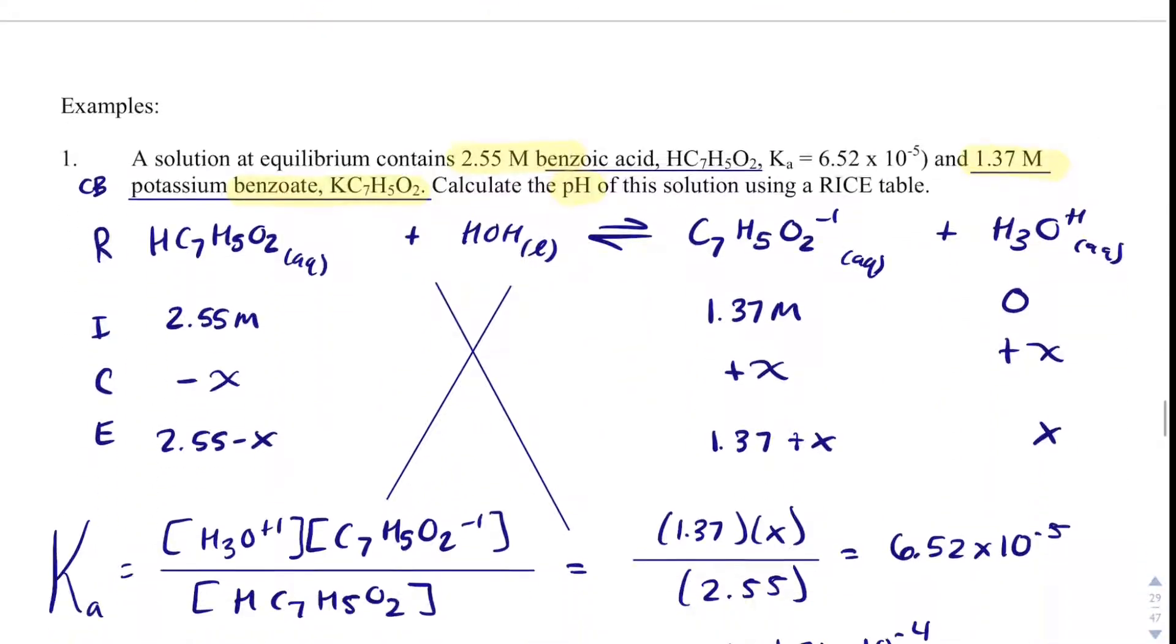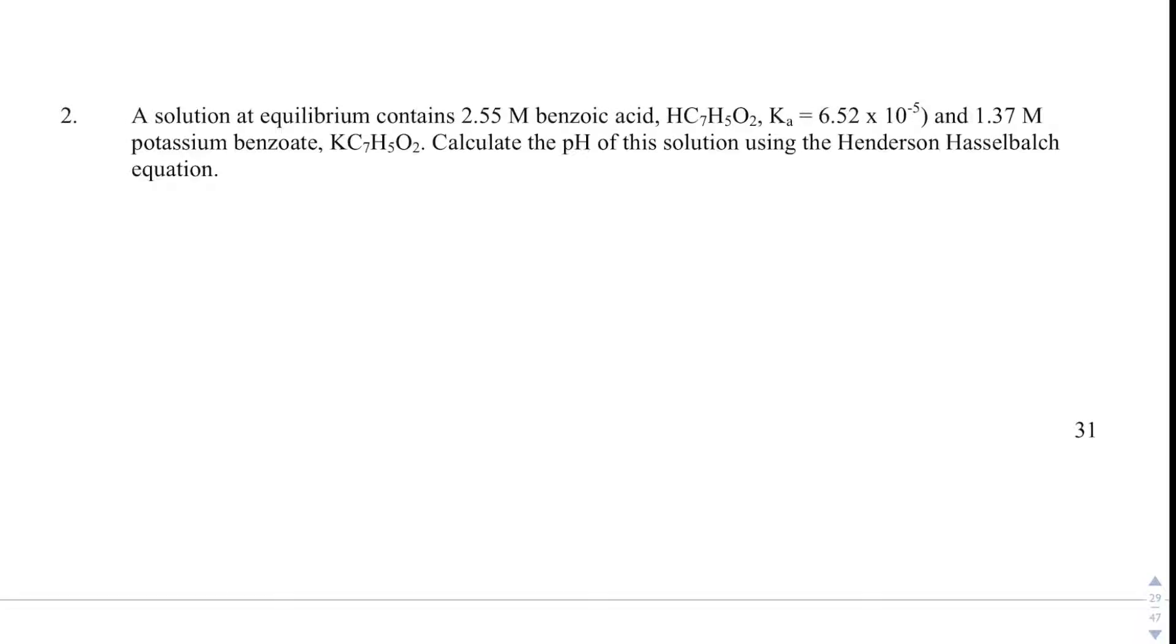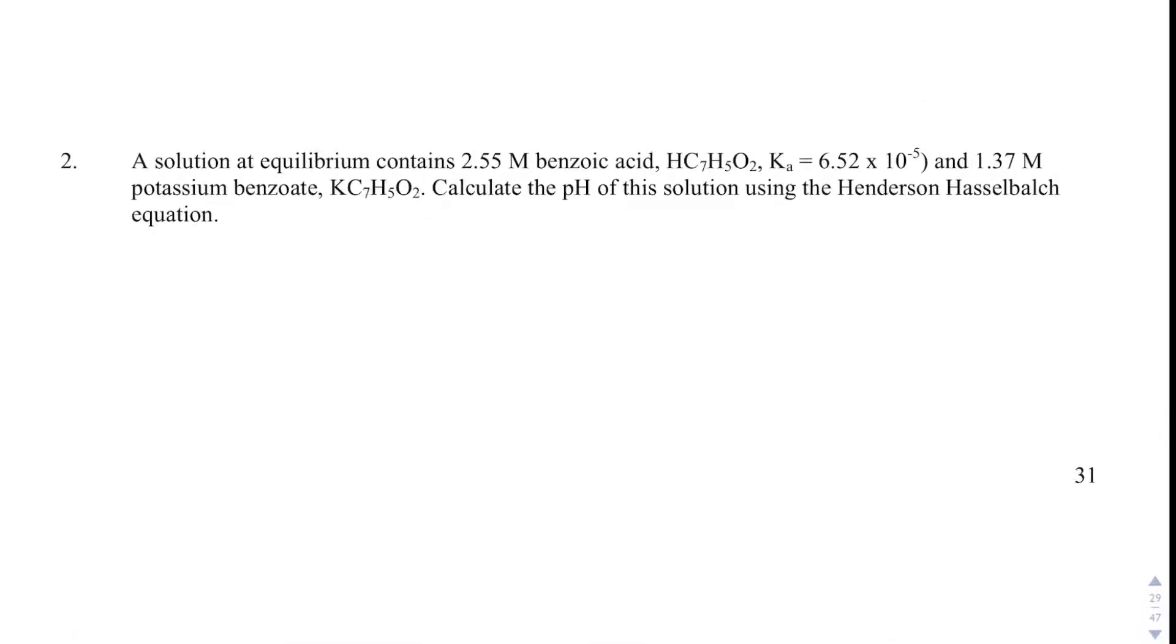So what we're going to do in example two is the same exact thing, except I'm just going to use the Henderson-Hasselbalch equation. That is used commonly in biochemistry, and it's just the equation for buffers. And what this does is it takes the same math from a RICE table, and it just converts it into a formula to make life slightly easier here. pH equals pKa plus log the conjugate base, which is benzoate here, divided by the acid, which is benzoic acid.